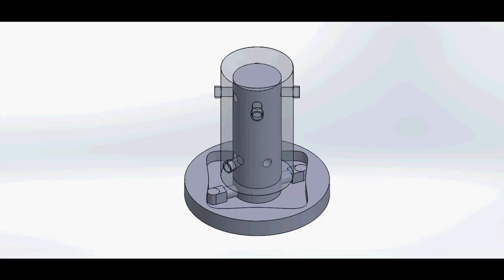The distributor type fuel injection pump has a single pumping element and the fuel is distributed to each cylinder by means of a rotor. It is small in size and lightweight.